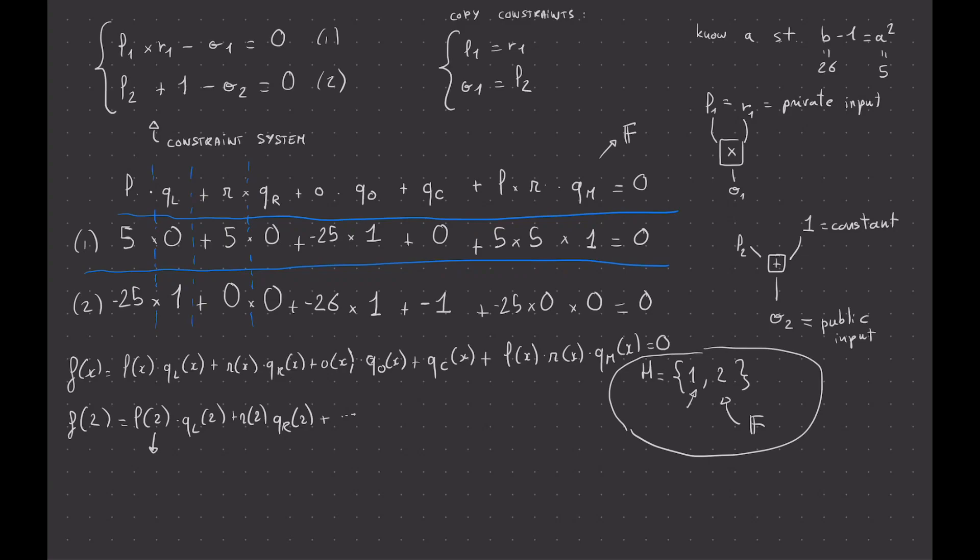All right, so remember we saw how to convert a circuit or program into an arithmetic circuit, and then we saw how to convert that into a set of equations, which we converted into a set of equations that look more like Plonk. And then we compressed all of these equations into a polynomial.